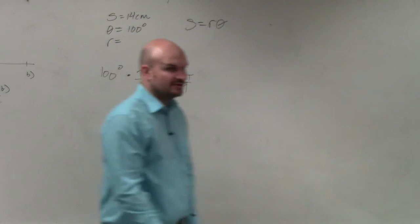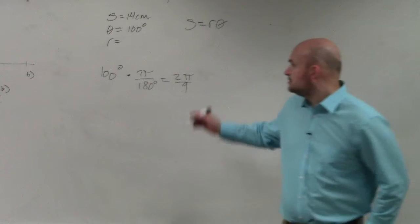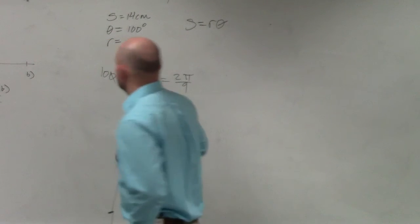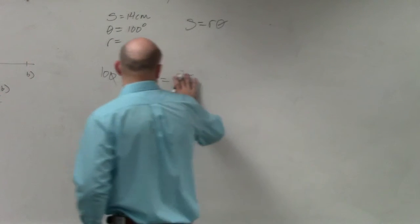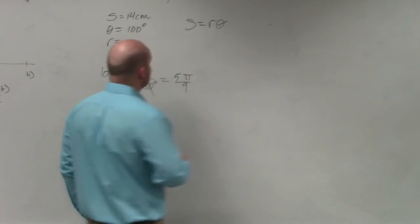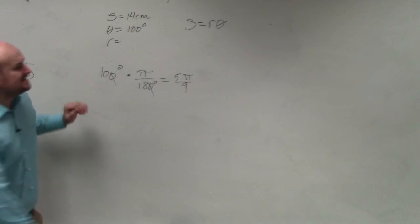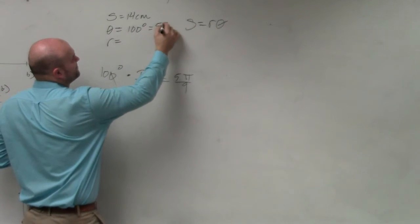Check my math, agree or disagree? Zeros, 10 over 9, 2 divides in the top, 5 over 9, right? Not 2 over 9, 5 pi over 9. So 100 degrees is equivalent to 5 pi over 9.